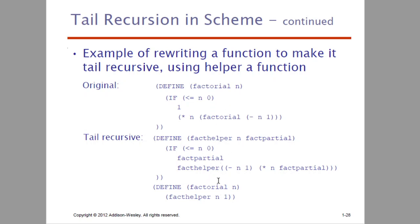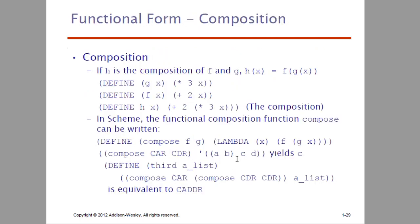This is what we call tail recursion. Next we have the functional form that is composition. We will learn about composition: G composition F, G composition H. A dot product is a dot operation which can be plus, multiplication, or division. Here H is the composition of F and G, meaning H(x) = F(G(x)).